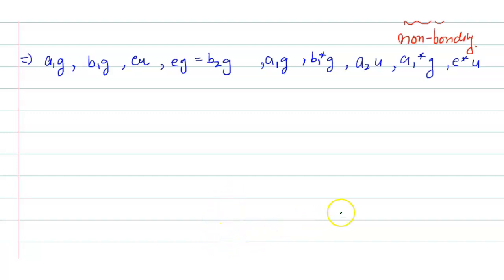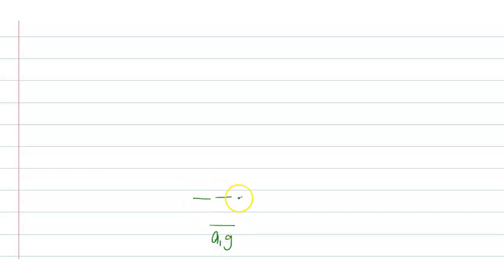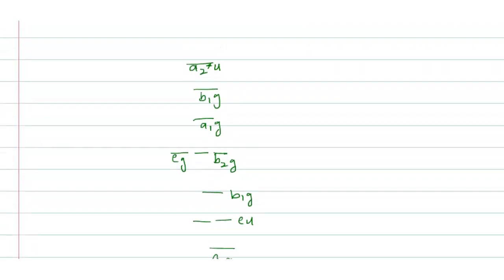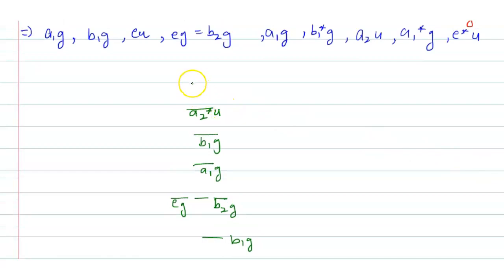Starting the MO diagram from the bottom: the lowest levels are a1g, then eu, then b1g, then eg, and b2g. Above those are a1g, b1g, and a2u*. At the top are a1g* and eu*. The np orbitals combine to form eu* and a2u* at the upper levels.